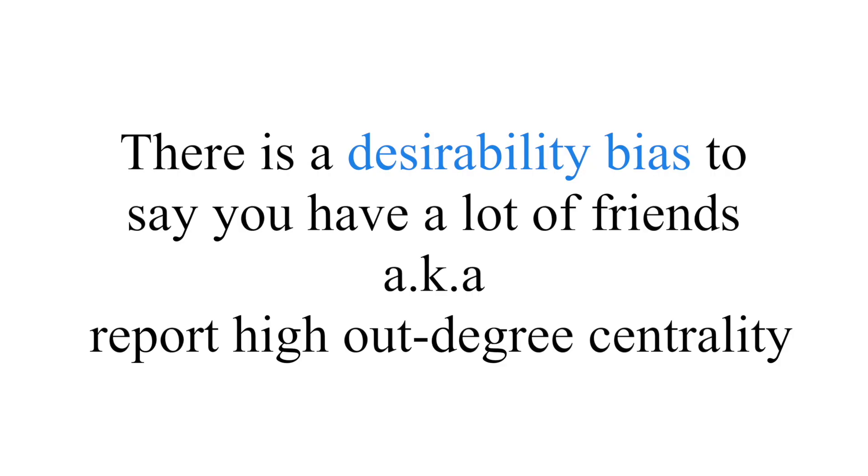In different analyses, these measures might be more or less important. In the colleague and discussion network example, we focused on in-degree centrality because people can't choose who nominates them, and being nominated can indicate important information. By contrast, people can nominate as many friends as they want, and there's often a desirability bias — people want to say they have lots of friends — so out-degree centrality in those networks is a less trusted measure.